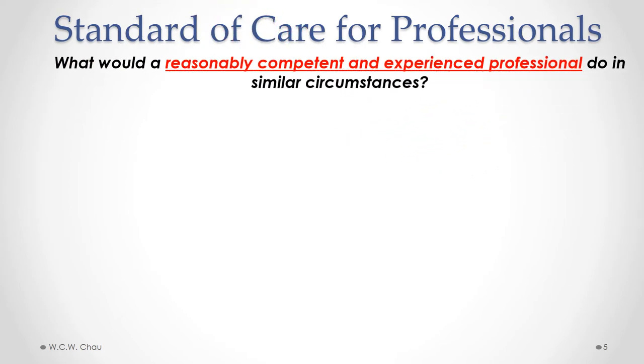If the person being sued for negligence happens to be a professional — such as a lawyer, a doctor, an accountant, or an engineer — then we don't apply the general standard of a reasonable person, because a reasonable person does not have the expertise or training of those professionals. So we apply a higher standard to professionals. The question we ask is: what would a reasonably competent and experienced professional do in similar circumstances?